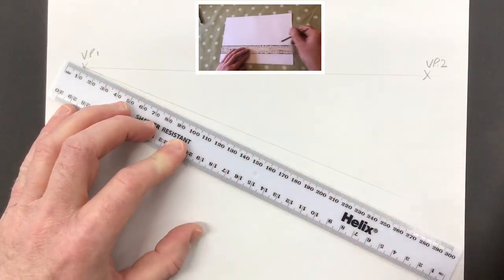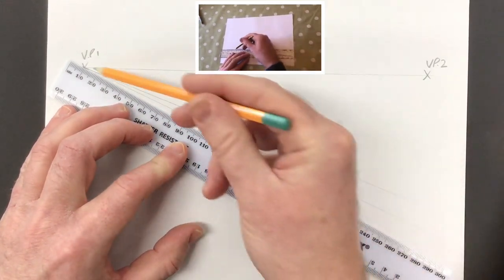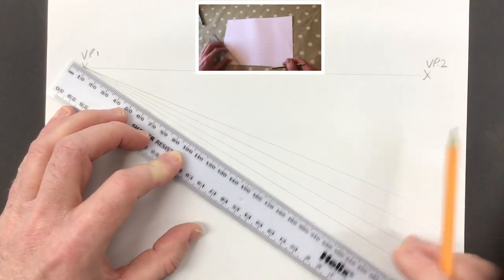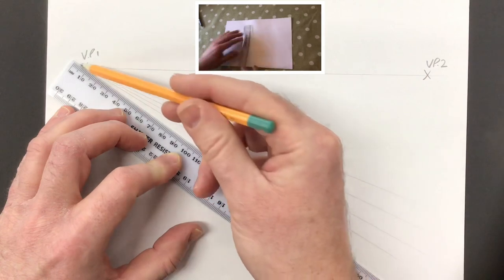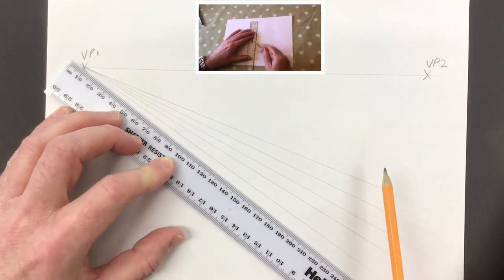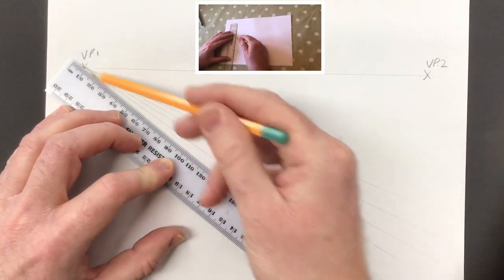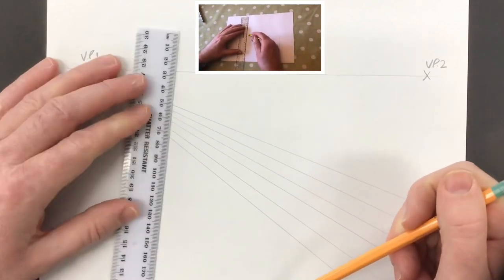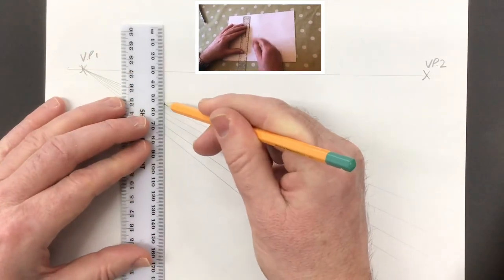Whereas last time you did six parallel lines, this time we're taking six lines from the vanishing point, from VP1. Remember to do the lines nice and light. The next thing is to divide these six lines into four sections.